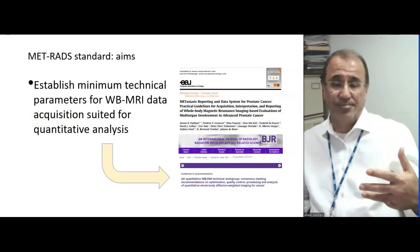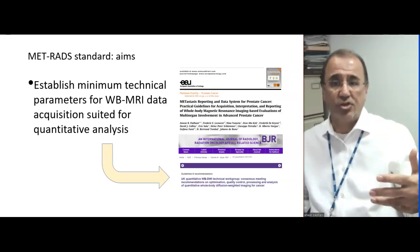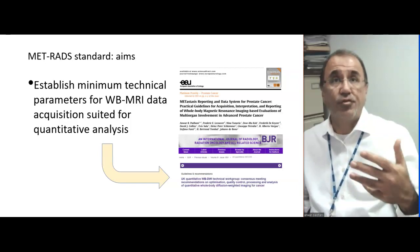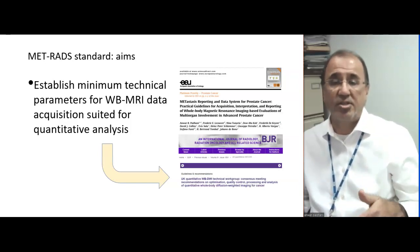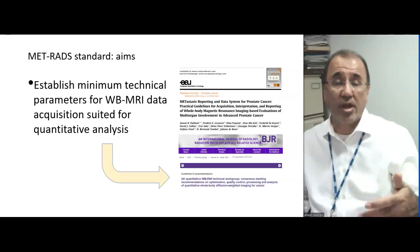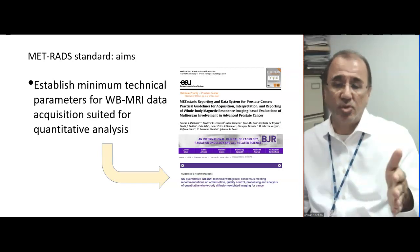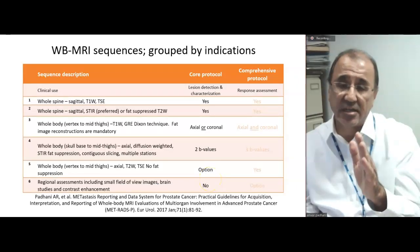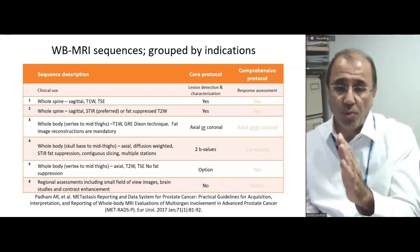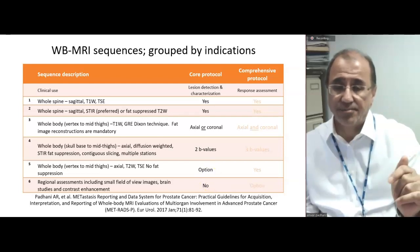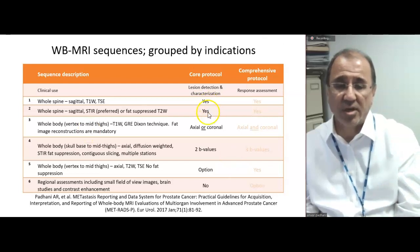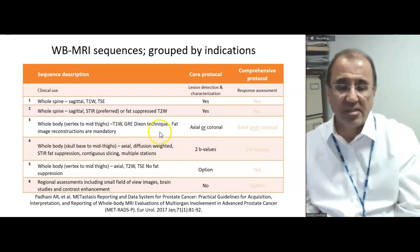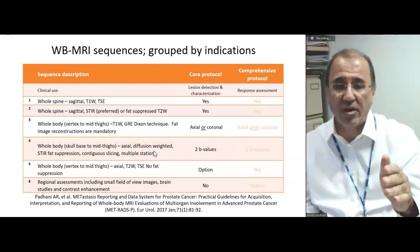With this background, the METRADS standard was introduced with a number of aims. The first aim was to establish the minimal technical parameters for whole-body MRI data acquisition suitable for quantitative analysis. METRADS defines two protocols: the core protocol and the comprehensive protocol. The core protocol consists of a sagittal T1 and STIR sequence, axial or coronal T1 Dixon technique, and 2 b-value diffusion imaging — that's it, half an hour.